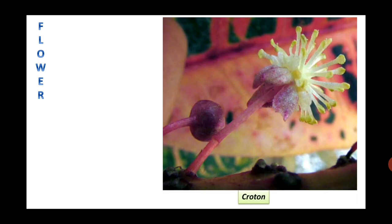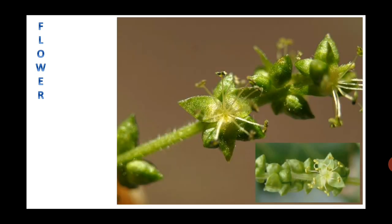In Croton, flowers are apetalous — that is, sepals are distinct in male flowers but absent from female flowers. In Mercurialis, the sepals are only three and they are united.